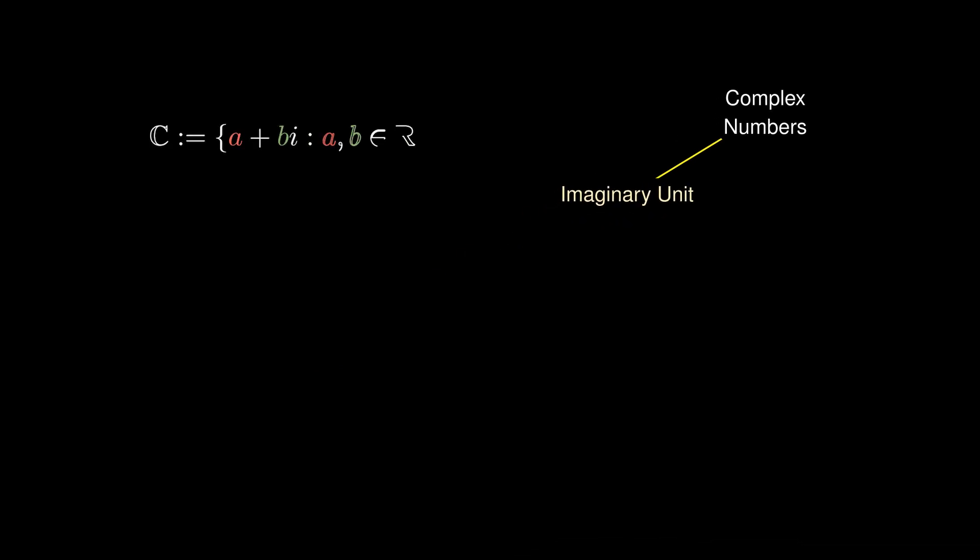Complex numbers can be rather confusing since we're now introducing numbers of the form a + bi, where i is the square root of -1. We call this the imaginary unit such that its square is -1.